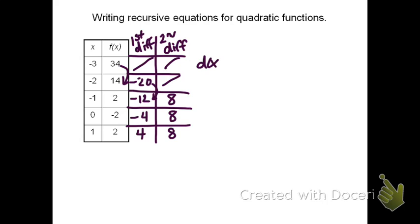To find the change for our recursive equation, I know that the first of the first differences was negative 20. I know that each time we're increasing by 8, and it's happening after x is negative 2. I do need to be careful with that because that's going to become x minus the negative 2.